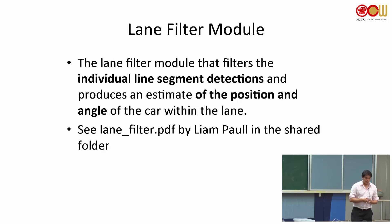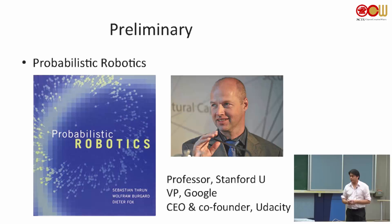And we have a document called lane_filter.pdf. That's the documentation to explain what exactly the theoretical background and what the symbols mean for the lane filter node in the code. And actually the lane filter will use a filter called histogram filter. The detail is in this textbook.